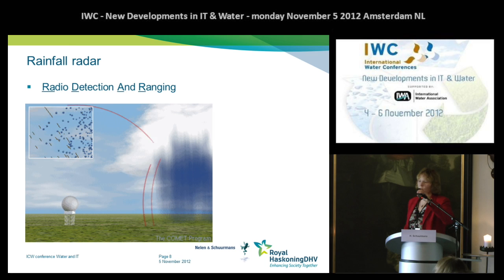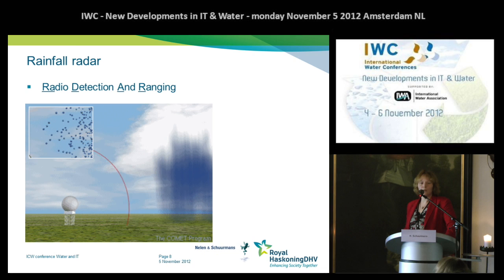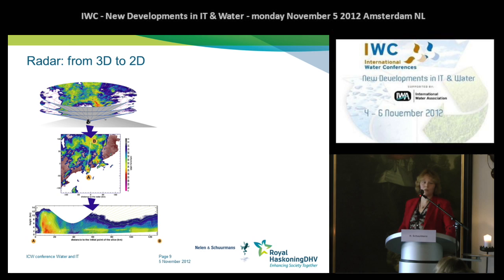This is the principle of rainfall radar. A radar doesn't measure rainfall directly — it's an indirect measurement, so it's a remote sensing technique. The radar sends out electromagnetic waves, and these are bounced back by rainfall, but also by other things like birds, and you have to filter that out. From these signals, you can determine the rainfall intensity. By the way, RADAR stands for Radio Detection And Ranging. It's a technique developed in the 1970s and is used more and more by water boards these days.